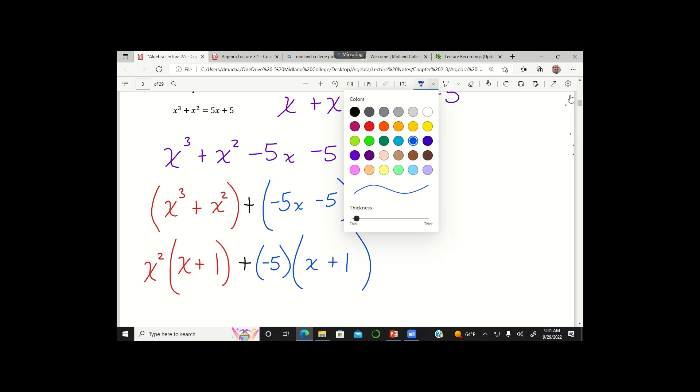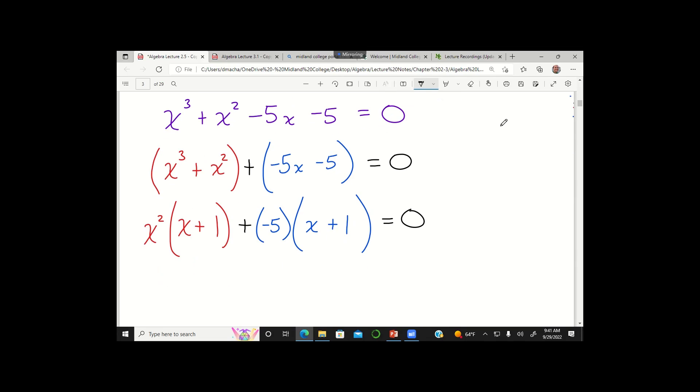So again, whenever you factor things out, you can always try to check your work mentally. Just say what would it look like if I distributed the negative 5 or if I distributed the x squared. So distributing the negative 5, for example, would be like negative 5x and then the negative 5 and the plus 1 give you negative 5. That checks out. So doing good so far.